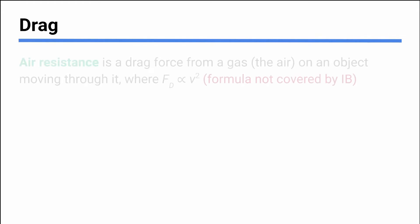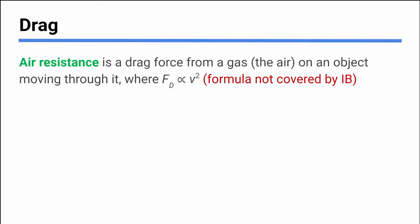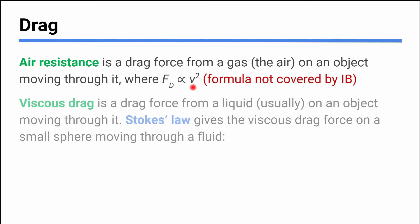Drag is another type of force we'll talk about — we have a little experience with it already from talking about air resistance. There are really two types of drag. Air resistance is one; more officially, we call this quadratic drag. When something's moving through a gas like air fast enough, there's all kinds of turbulence that happens around it. You get a drag that depends on speed squared, so the drag force is proportional to V squared. The faster you go, you get a lot more drag. You don't really need to use this formula — the IB doesn't give you it. You won't be asked to do much math with quadratic drag.